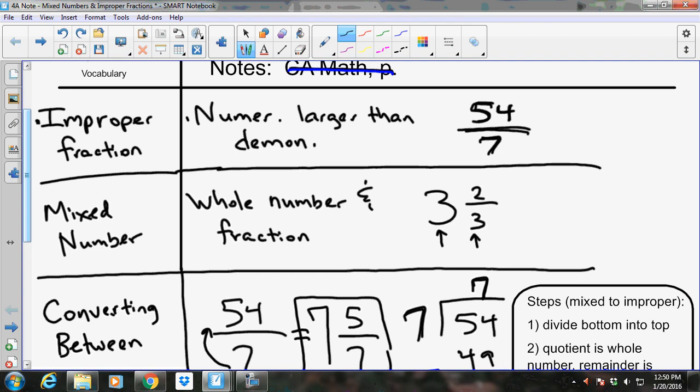You cannot leave an answer like that when you're working on Alex or anywhere else for that matter. If you walk into the butcher shop and you ask for 54 sevenths of a pound of beef, they're going to be like, what are you talking about? They're going to expect you to say it in the form of a mixed number. So that's why we need to know how to convert it.